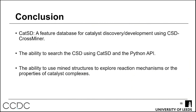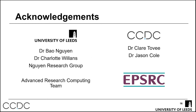To conclude, I've presented CATSD — a feature database for use in CSD CrossMiner to aid the discovery, design, and development of ligands for homogeneous catalysis. We use the CSD Python API to find similar structures within the CSD and extract additional information to build complex structures, explore properties of organometallic complexes, reaction mechanisms, and predict the activity of these complexes. I'd like to thank my supervisors from the University of Leeds and the CCDC.